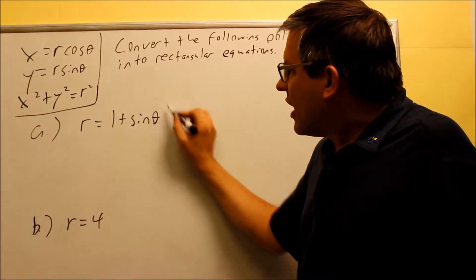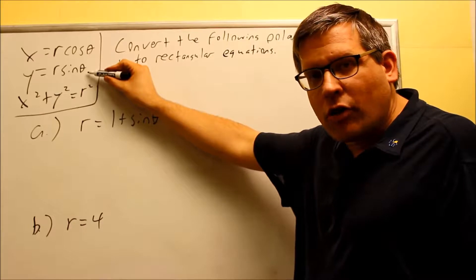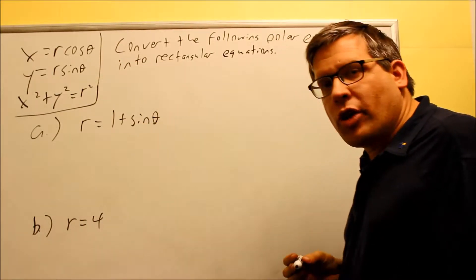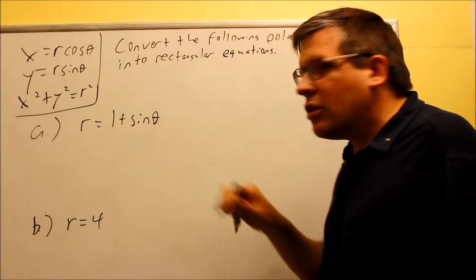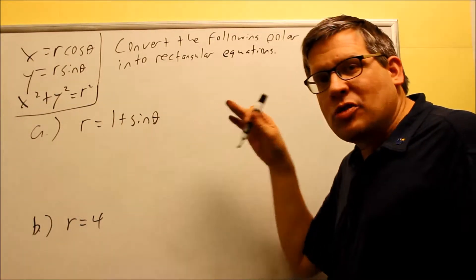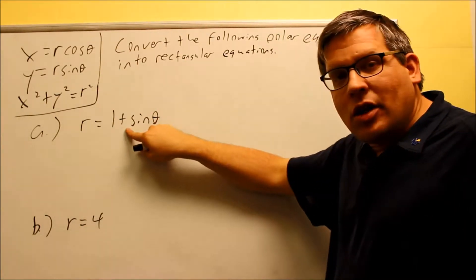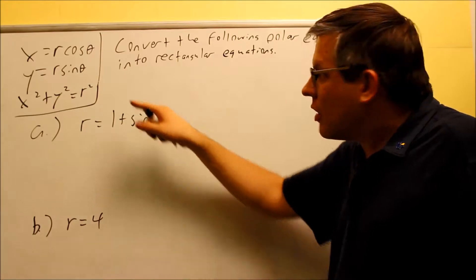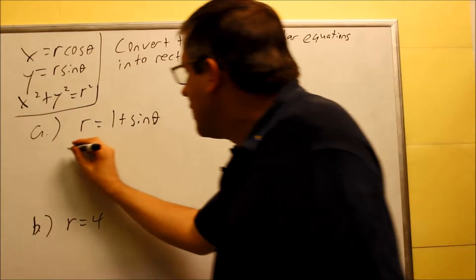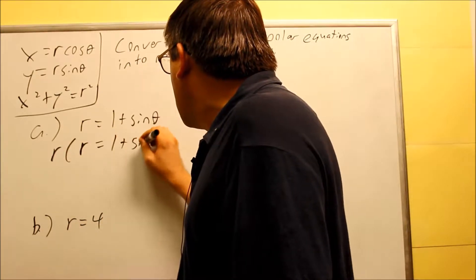I notice that there's a sine theta here, and I have a sine theta there, but I need to have an r in front of it. So I can't put anything in there for right now. One technique you might want to do in some of these problems is you may need to multiply the equation by something so you can actually plug in values. If I had an r in front of the sine theta, that would be great because then I could put in a y and change it out.